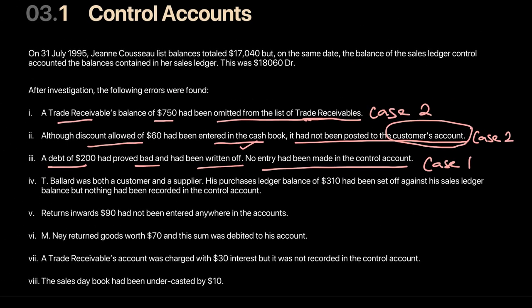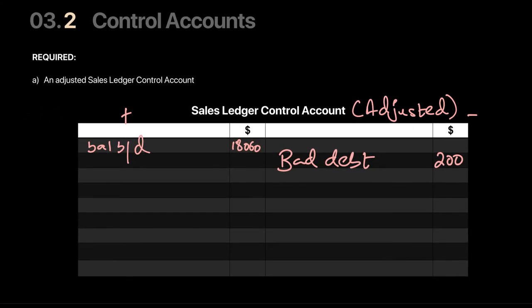Error 4: T Ballard was both a customer and a supplier, making this a contra entry. His purchase ledger of 310 has been set off against the sales ledger, but nothing was recorded in the control account. This is Case 1 — missing from the control account only. We enter the contra set-off of 310 on the credit side of the control account, as it reduces trade receivables.